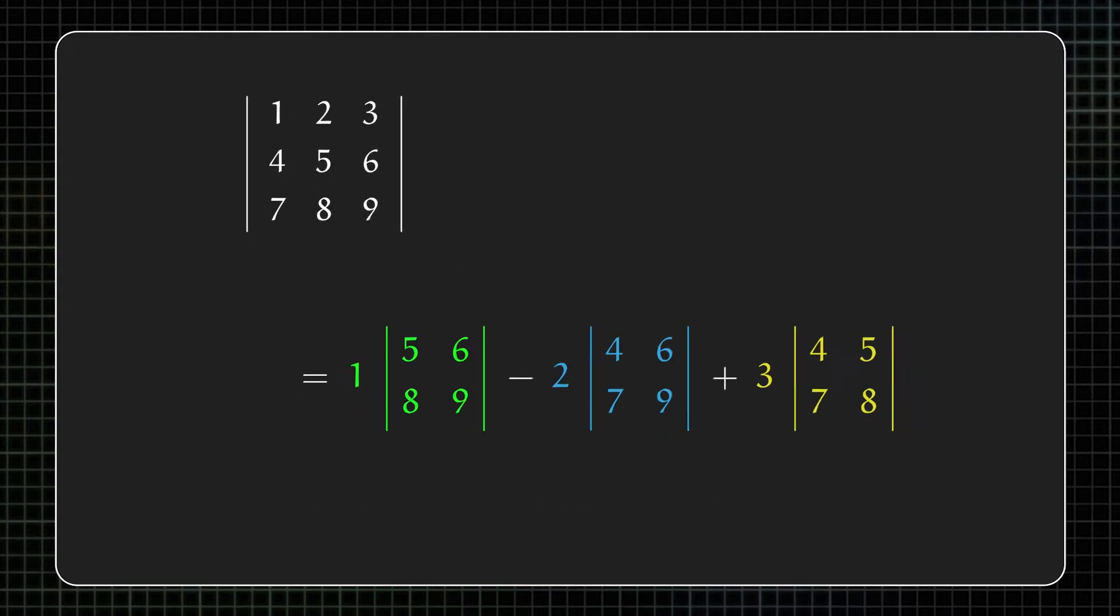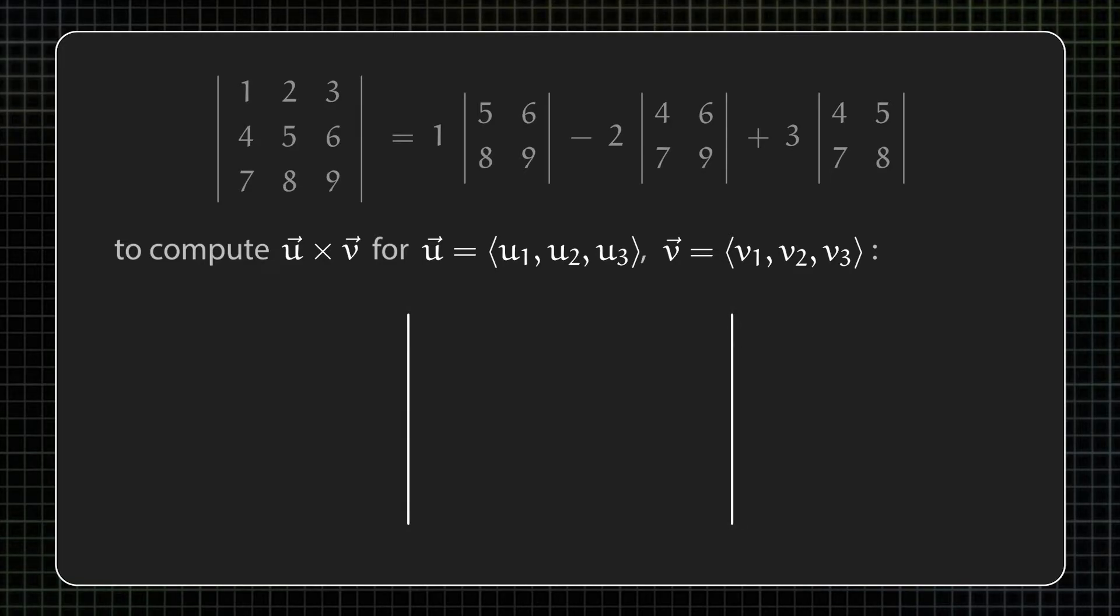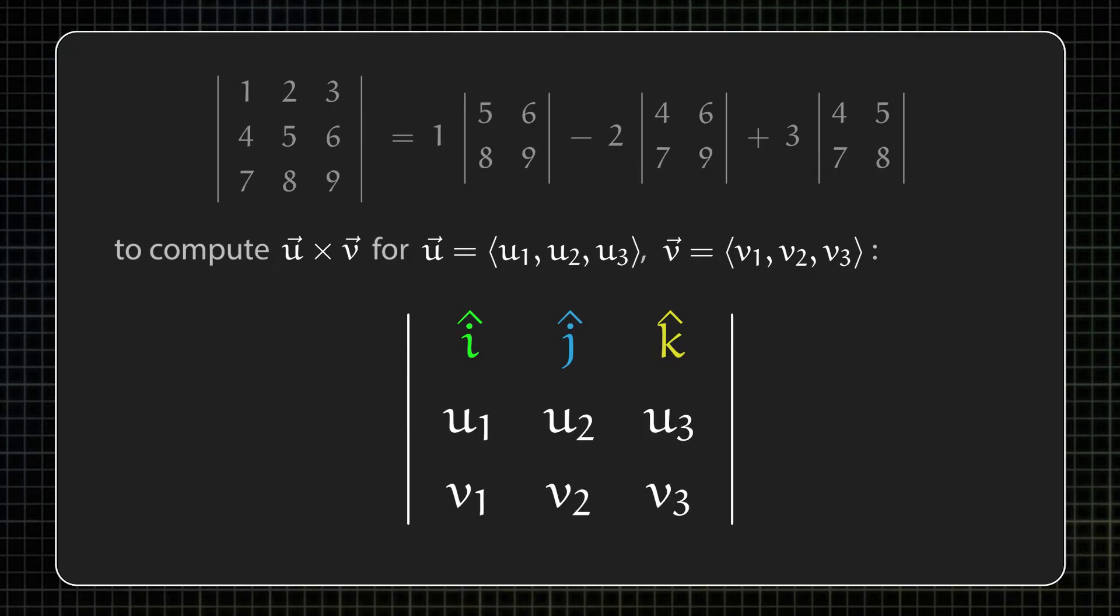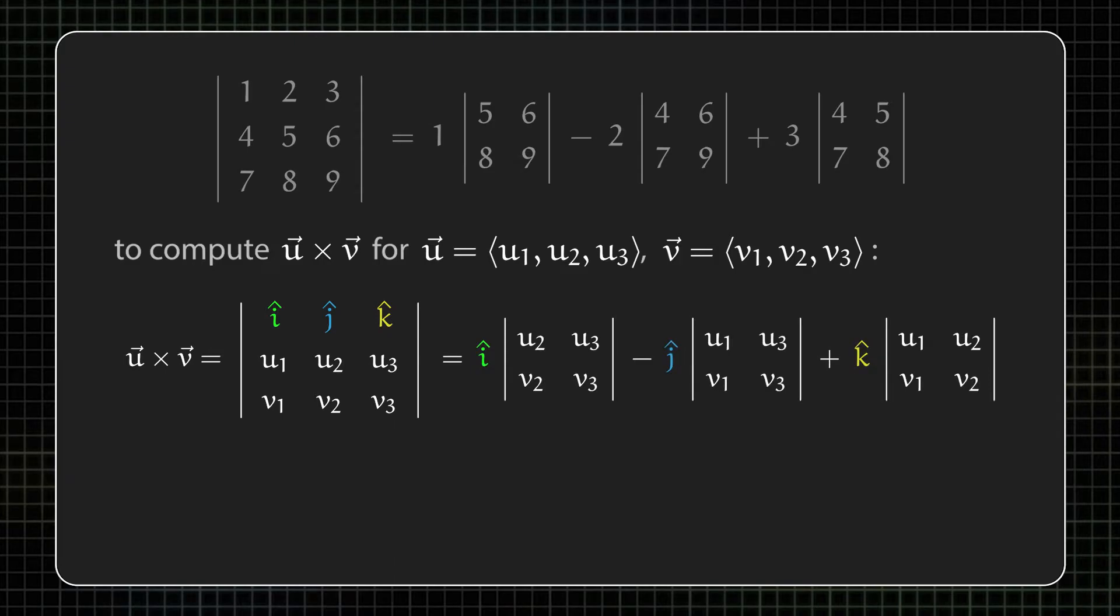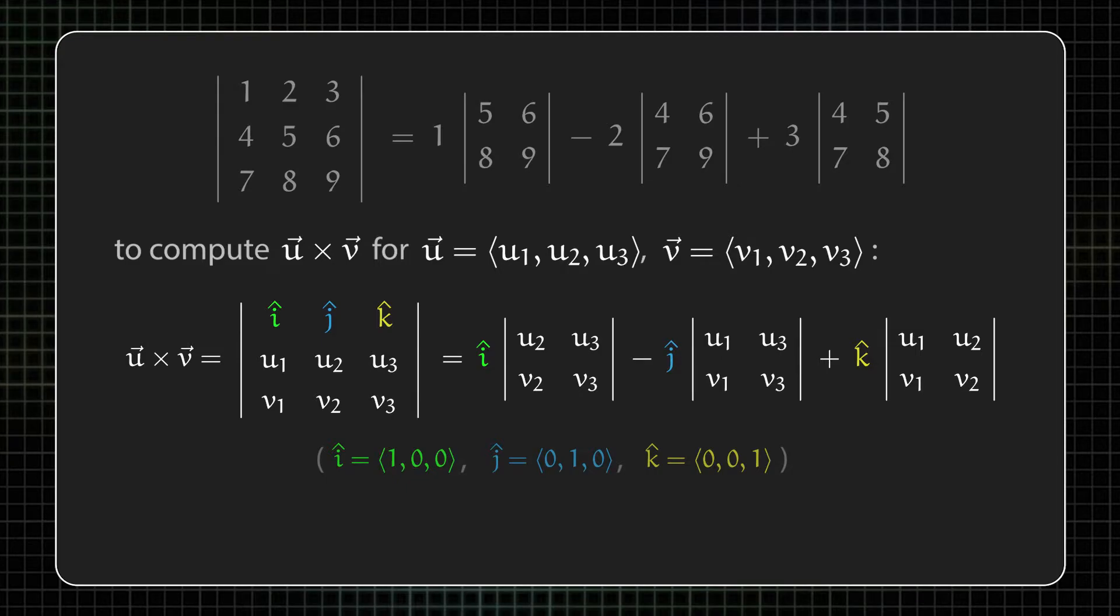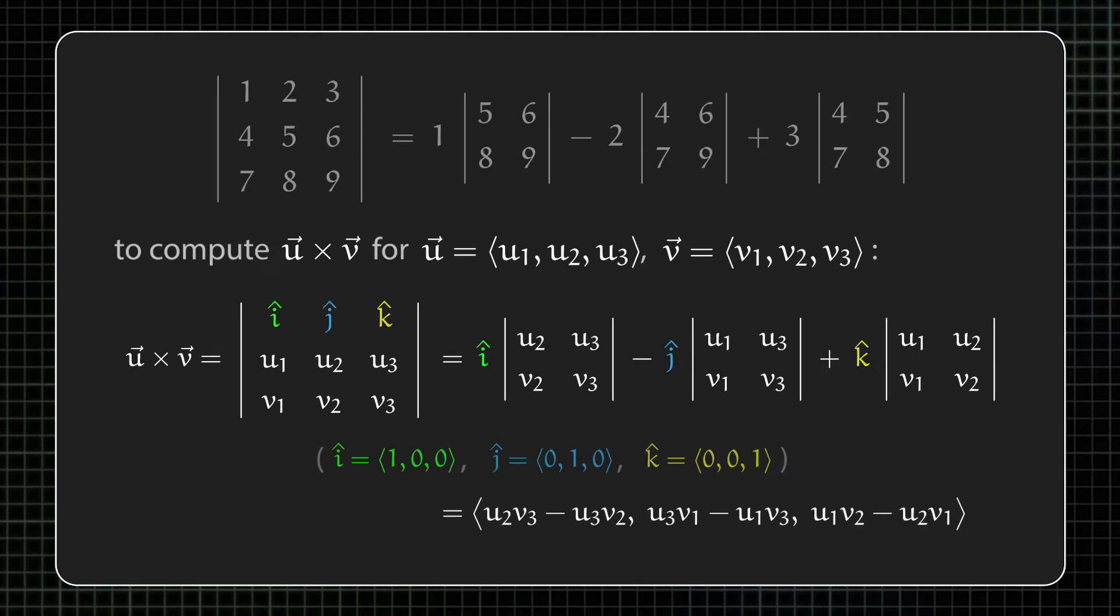Now to use this to compute the cross product of two vectors, we build a three-by-three matrix where the first row consists of the standard unit vectors i, j, and k, and the second and third rows are the vectors that we want to cross. Taking the determinant of this matrix by expanding along the top row gives us an expression that looks like this. And if we remember that i, j, and k are just stand-ins for the unit vectors (1,0,0), (0,1,0), and (0,0,1), then the expression we end up with is the same as the formula for the cross product that I showed you at the beginning of the video.